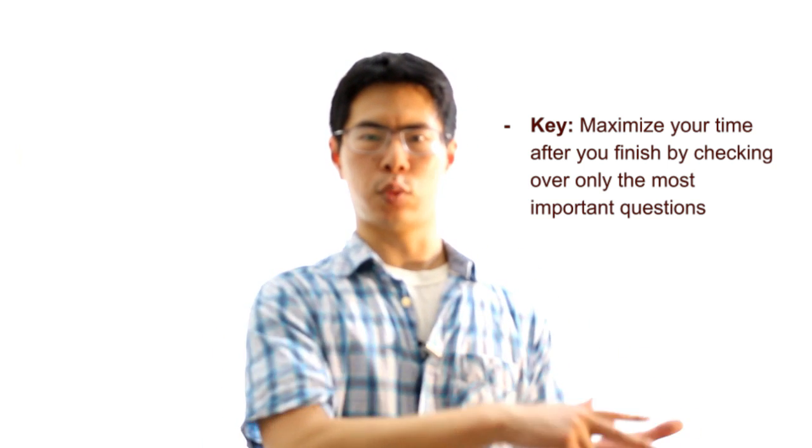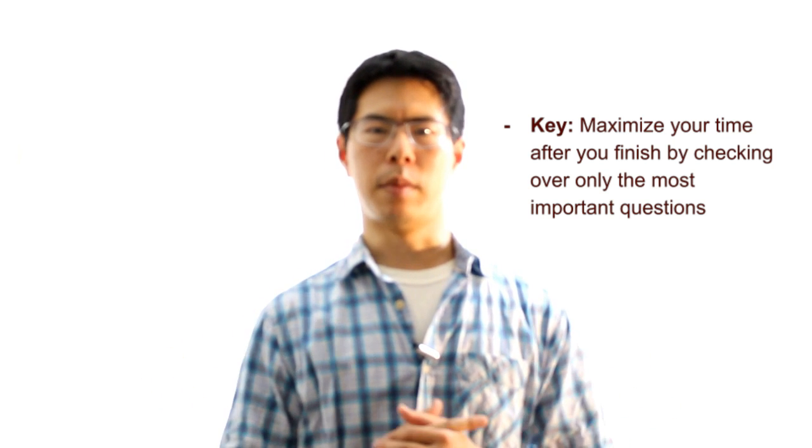Writing down the numbers of both questions that you skip and questions where you're not sure about on the first page of the test in this way is one of the secrets to getting a great score on the ACT math test because this allows you to make the most of your time after you finish the test.